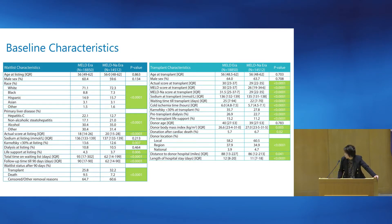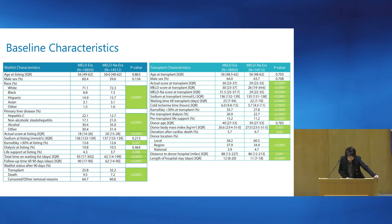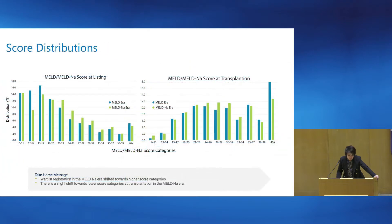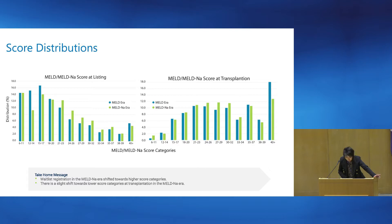This table shows the baseline characteristics of wait list and transplant characteristics of this population. Roughly 34,000 individuals were included in our study — 18,000 in the MELD era and about 14,000 in the MELD sodium era. This highlights the score distributions at listing and transplant. Green is the MELD sodium era, and you can see that at transplant, the MELD score shifted towards a slightly lower MELD category.